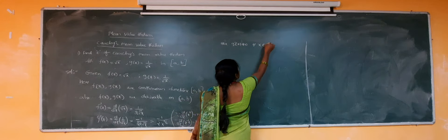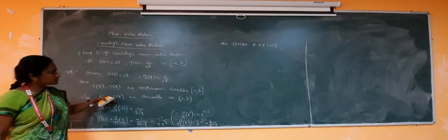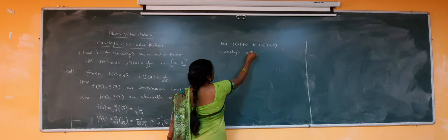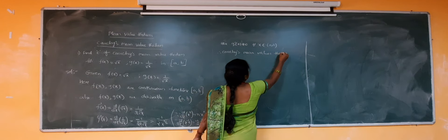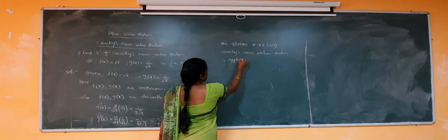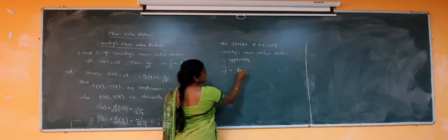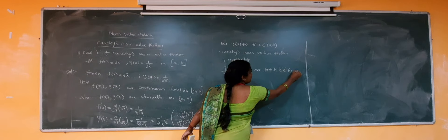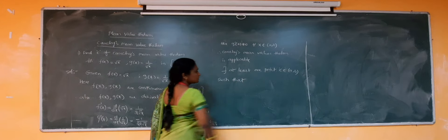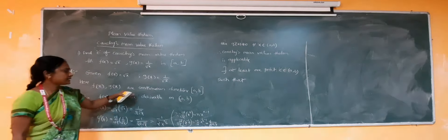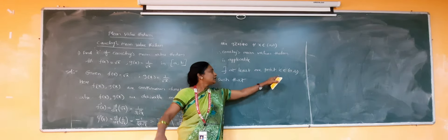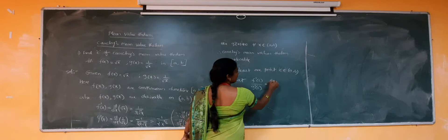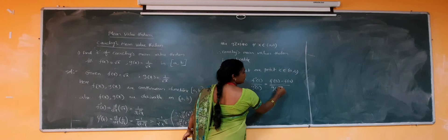For every x belonging to open interval (A, B), g'(x) ≠ 0, so the three conditions of Cauchy's mean value theorem are satisfied and the theorem is applicable. Therefore there exists at least one point c in (A, B) such that f'(c) / g'(c) = [f(b) − f(a)] / [g(b) − g(a)]. Now find f'(c): since f'(x) = 1/(2√x), we get f'(c) = 1/(2√c). And f(b) = √b, f(a) = √a.